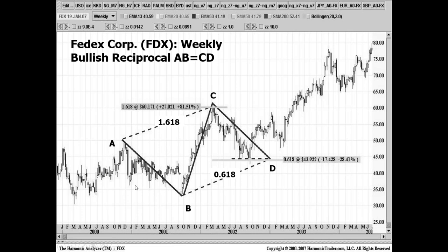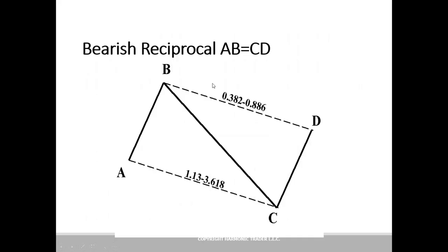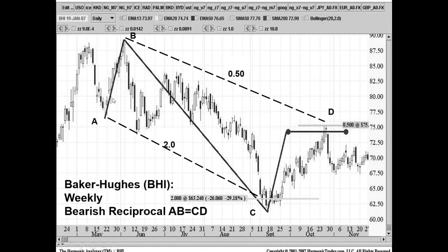This chart of FedEx on a weekly shows that whole idea. The initial thrust — this AB segment goes to a 1.618. We look at the approximated move from 50 to 32-33, that's about 17 points, approximated, looking in this 43 area. For the bearish reciprocal ABCD, here is the last clear thrust in the downtrend, basically from 76 up to 89 — 13 points.